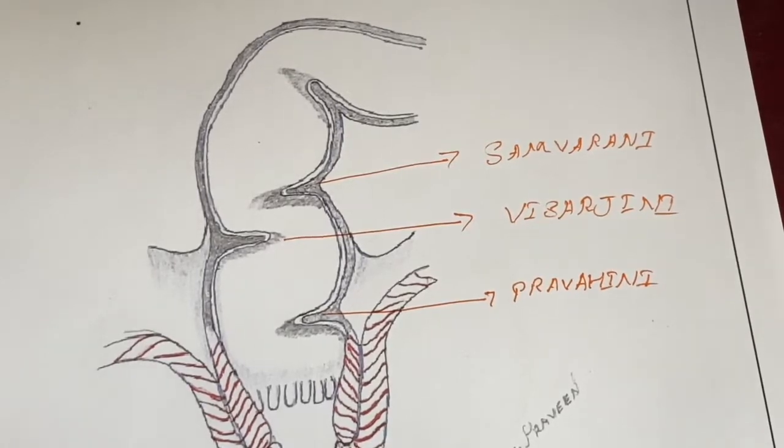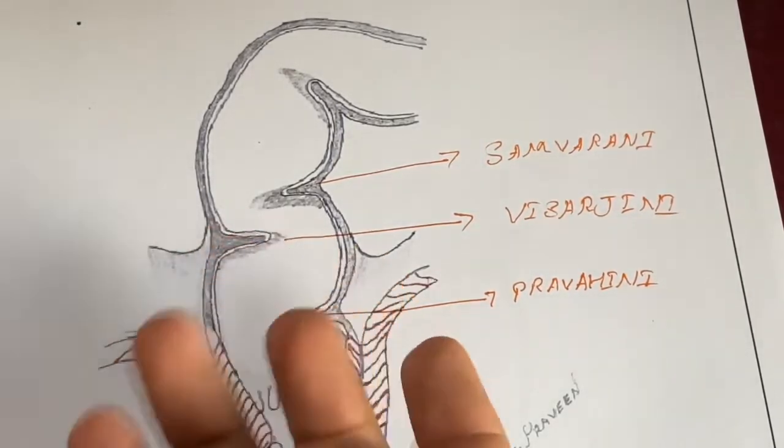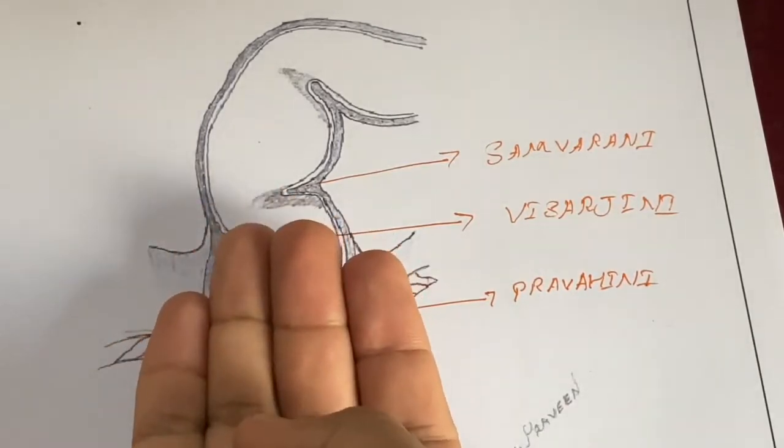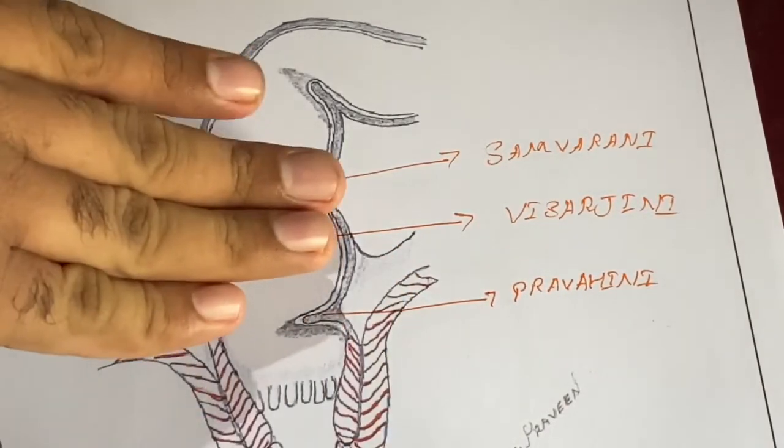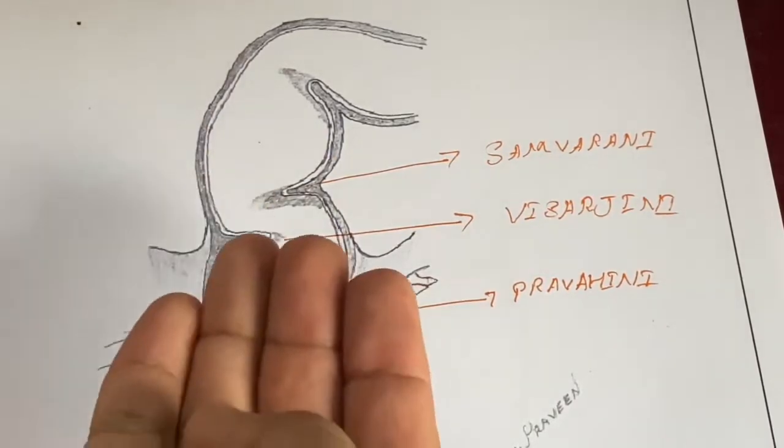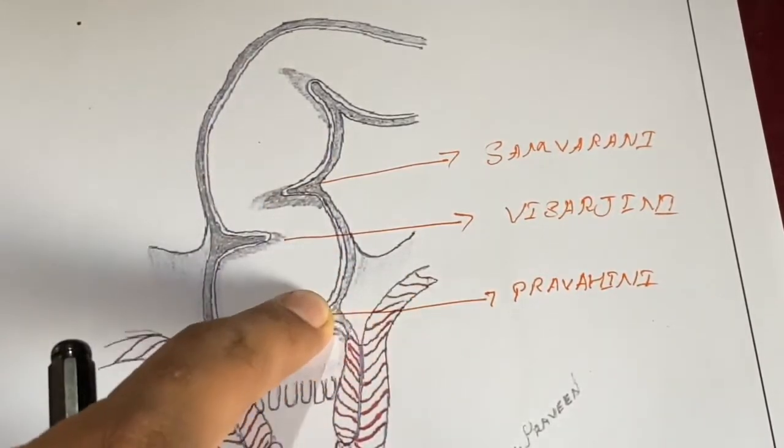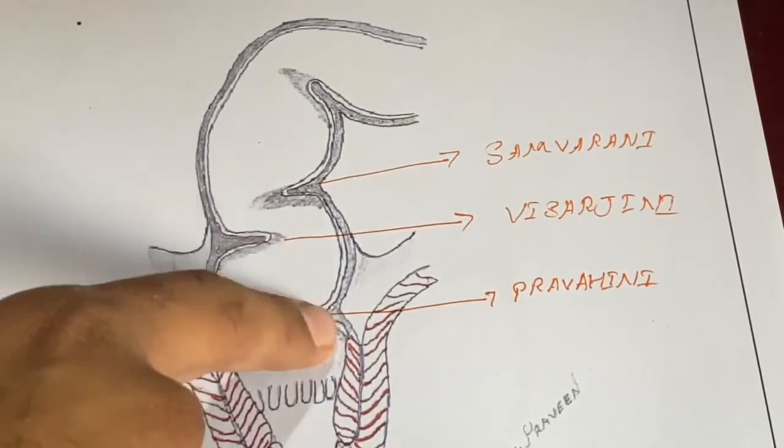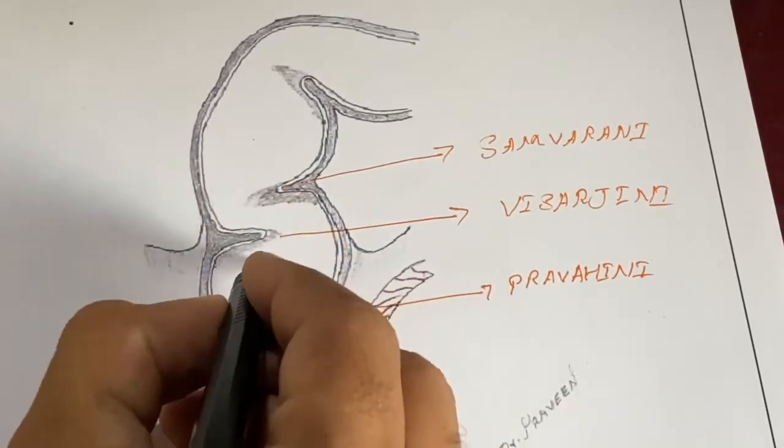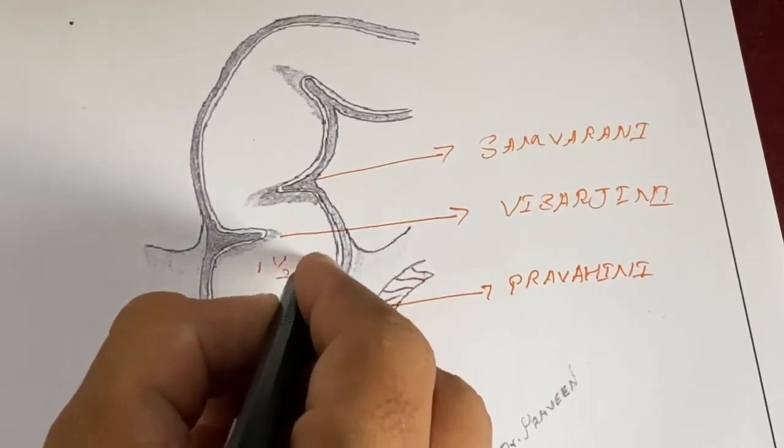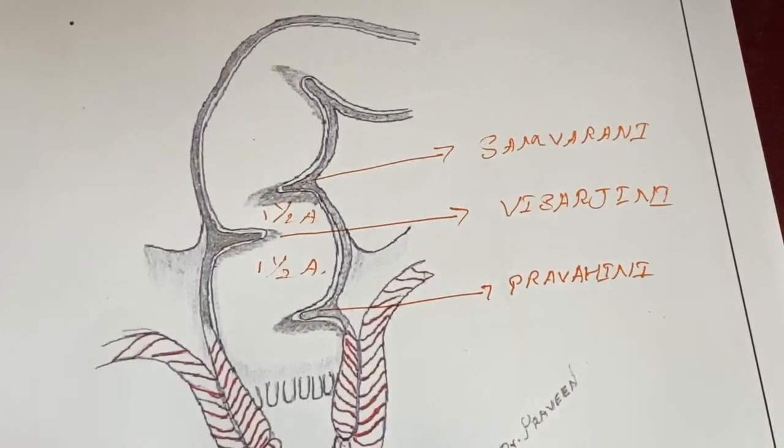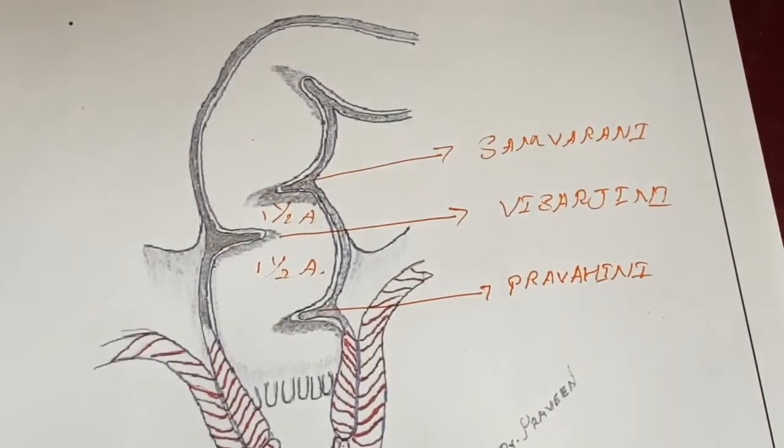And the breadth of these valayas is 4 angula. 4.5 angula is the gudha, 4 angula is the breadth, and each wall having a distance of 1.5 angula.